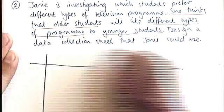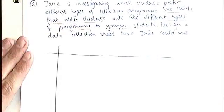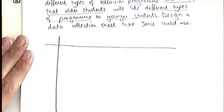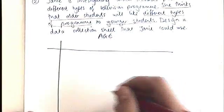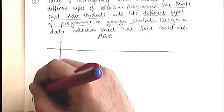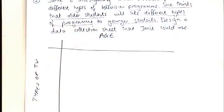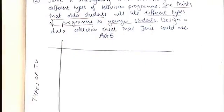A two-way table means you need two sets of categories. In the tally chart, we just had one set of categories — different types of transport. But in this example, we need two sets: people's age and the types of program. I'll put 'types of TV' for short. You always have one set going across the top and one coming down the side.